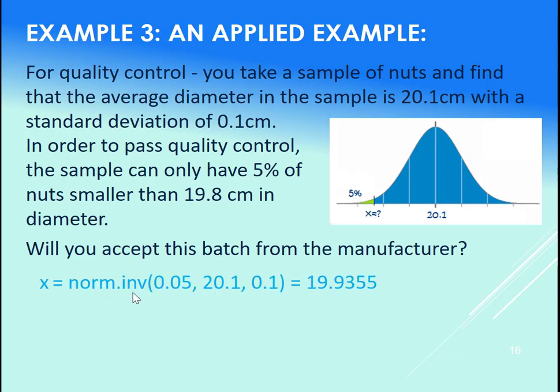We would use a norm.inv for that. We have the area, we're looking for the x value. When you're looking for an x, use your norm.inv. So put in that 5%, that's the area to the left of our x value. Put in the 20.1 for the mean, the 0.1 for the standard deviation. Notice we do not put a comma one for norm.inv. And that gives us 19.9355. Let's try that.